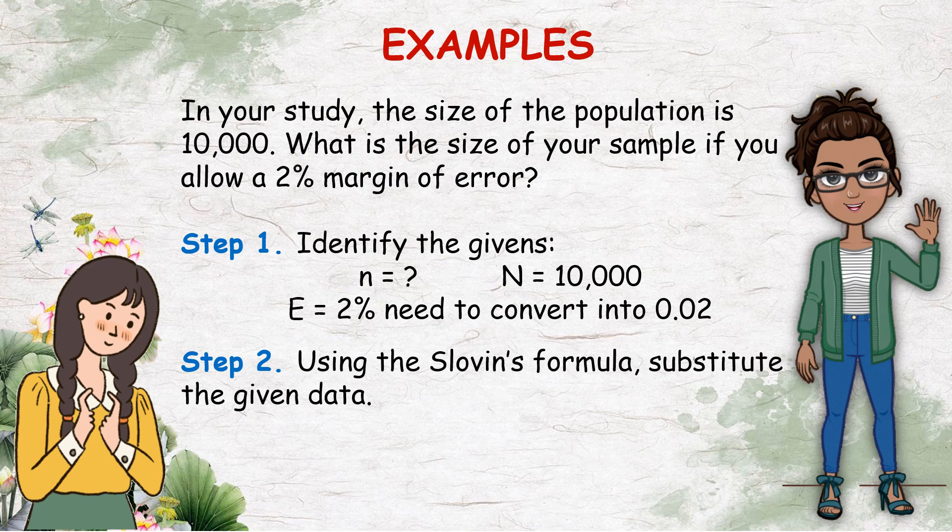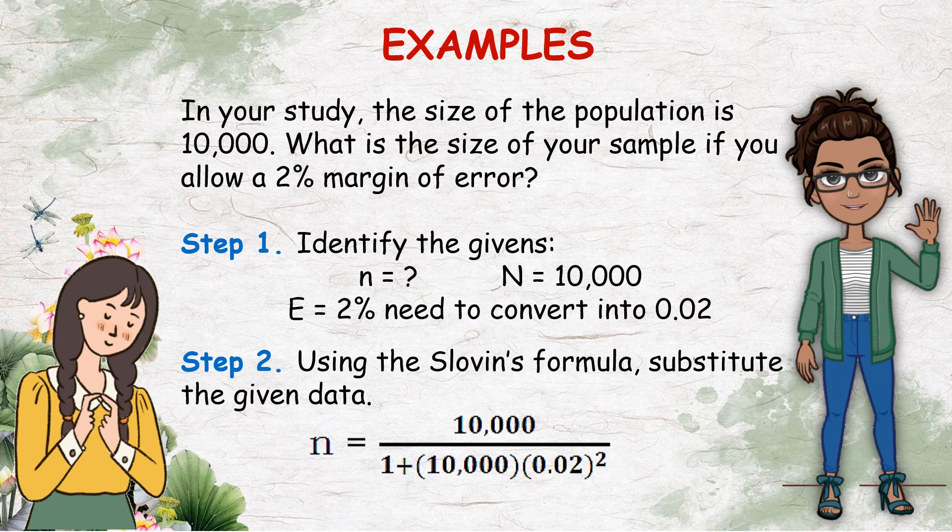Step 2, use the Sloven's formula, then substitute the given data. We will come up with n equals 10,000 divided by 1 plus 10,000 multiplied by 0.02 squared.